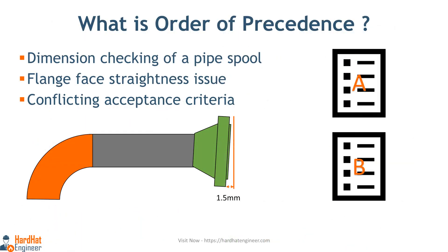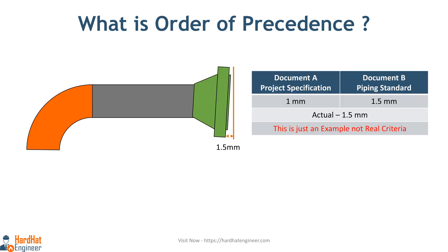Let's say you are doing dimension checking of a pipe spool. During the inspection, you found that the straightness of the flange face is not acceptable — it is tilted more than required. But at the same time the contractor is showing you another document, and as per that document it is acceptable. How will you decide in this situation? See the image for more clarification. The acceptable limits mentioned in the documents are shown alongside the actual reading.